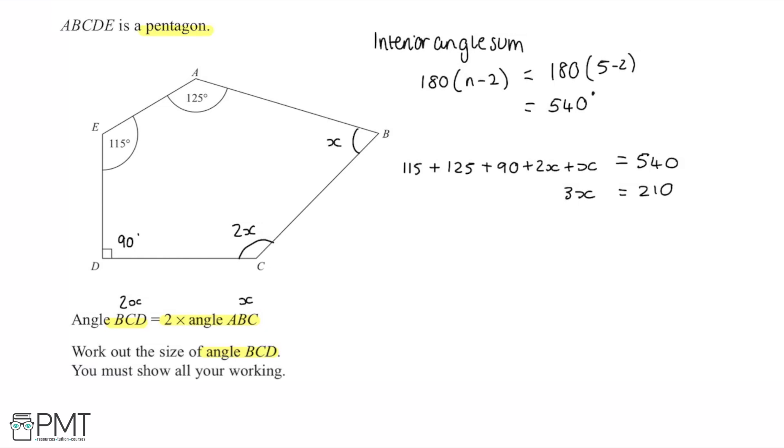And then I can find the size of angle x by dividing both sides of this by 3. And that gives me x as being 70 degrees. However we've been asked to find the size of the angle BCD so this angle here which is 2x. So I need to take 2x which is 70 multiplied by 2 to get 140 which is the correct final answer for the size of angle BCD.